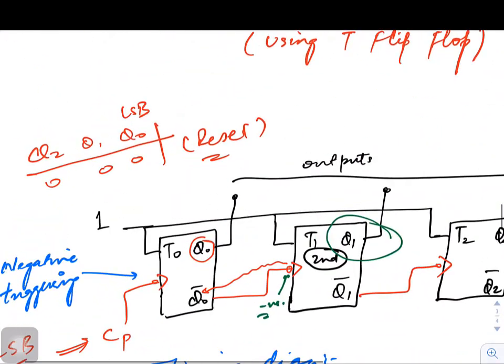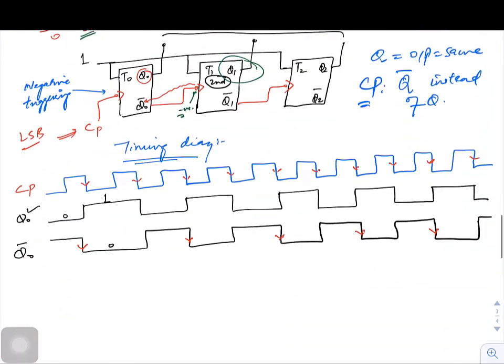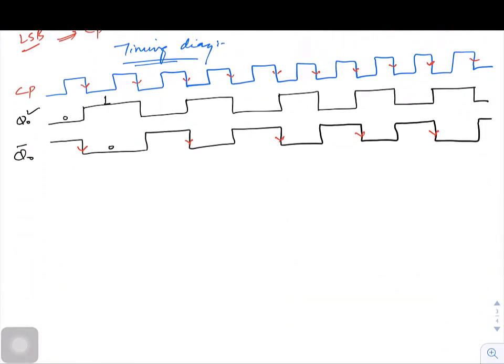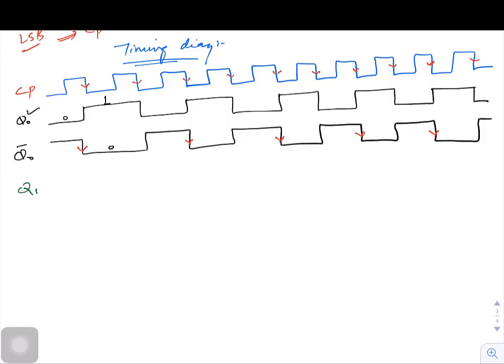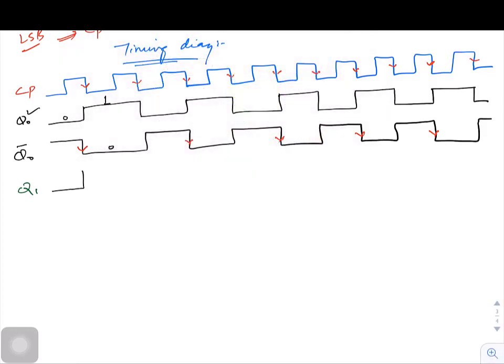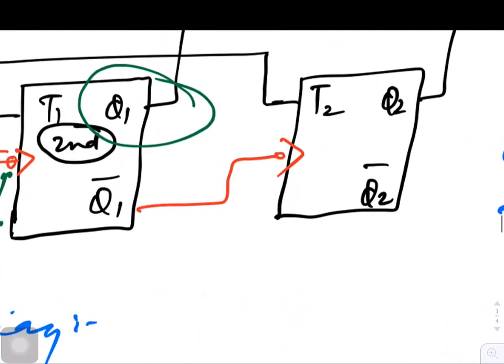Again, initial value of Q1 was zero, so the value will toggle from zero to one whenever Q0 bar is moving from one to zero. Initially value was zero, and from zero we are moving to one, then zero, then again one, again zero, then again like this. So this is my Q1.